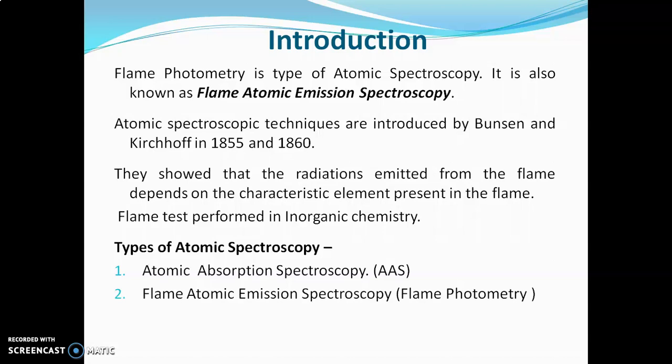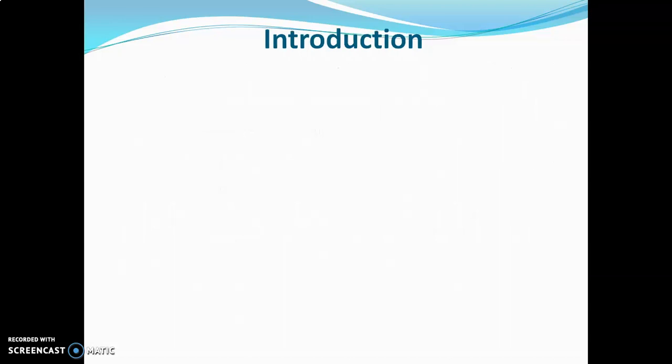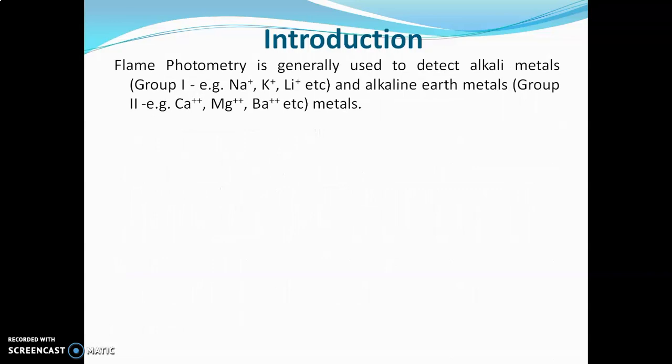There are three types of atomic spectroscopy: first is atomic absorption spectroscopy (AAS), second is flame atomic emission spectroscopy (flame photometry), and third is luminescence spectroscopy. Flame photometry is generally used to detect alkali metals — group 1 metals like sodium, potassium, and lithium.